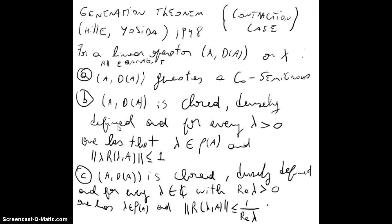B or C just have the difference that here we are considering lambda a complex number, and here just a real number greater than zero. So there is nothing special between proving from B to A or C to A. We're going to go from B to A.